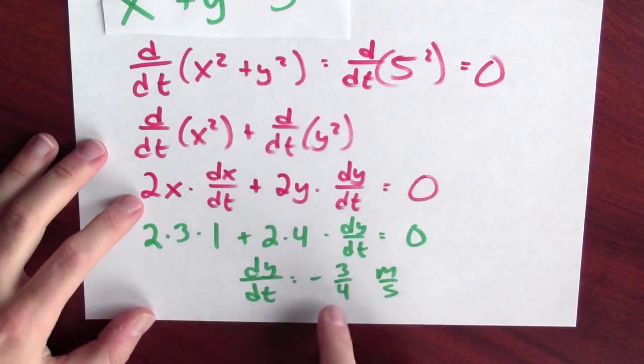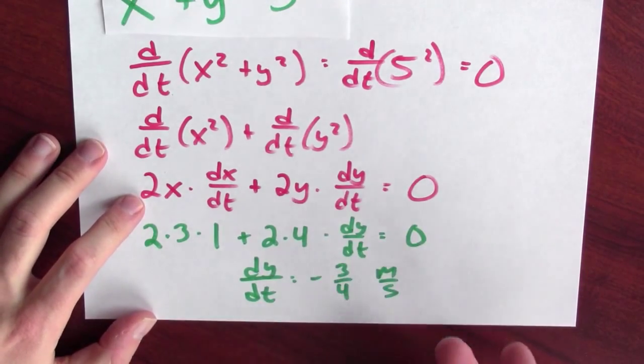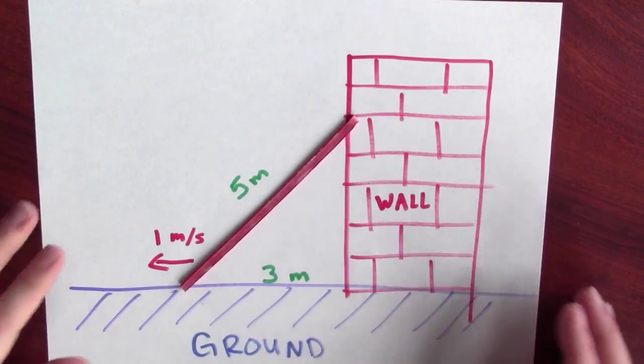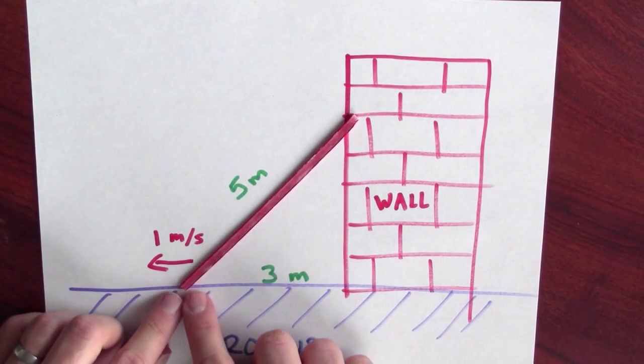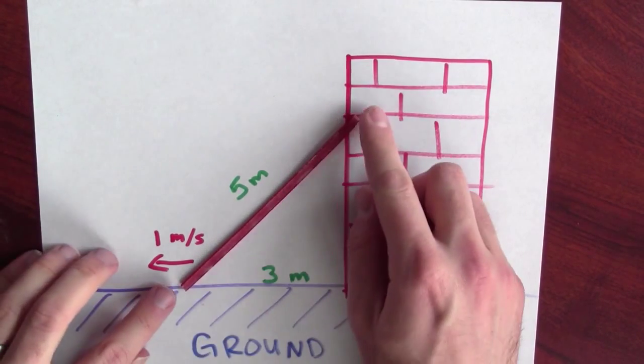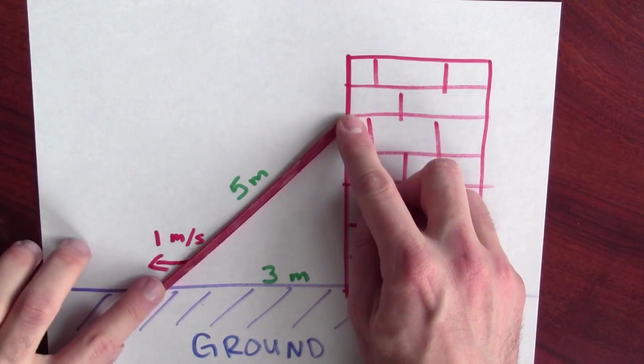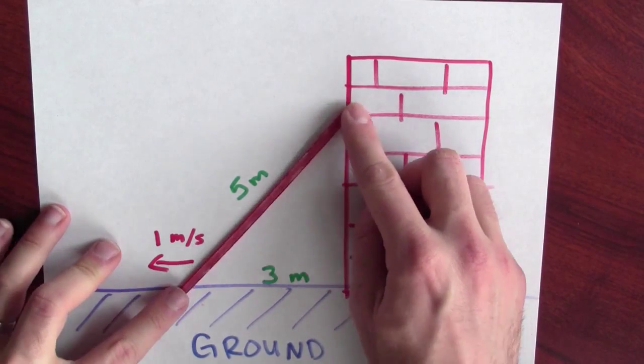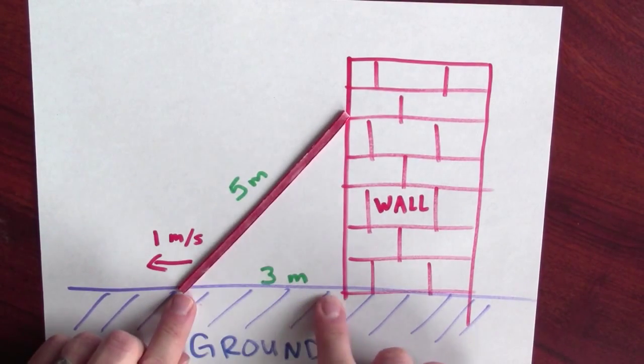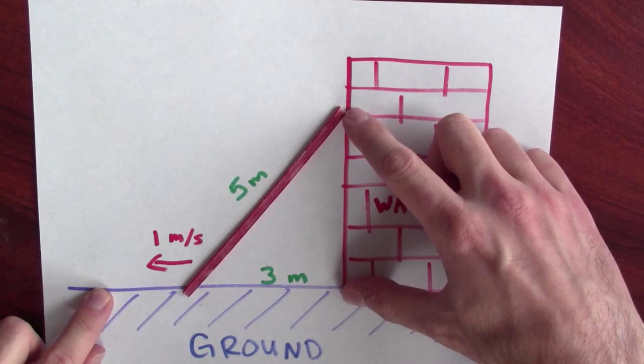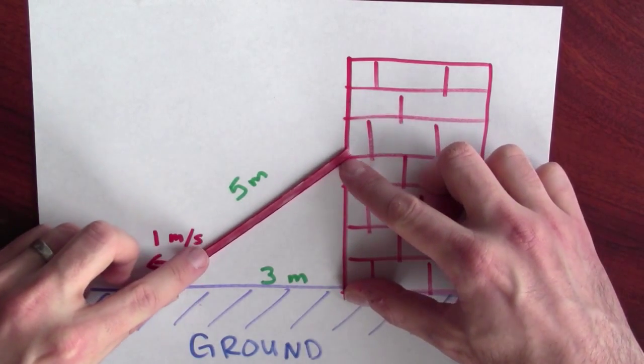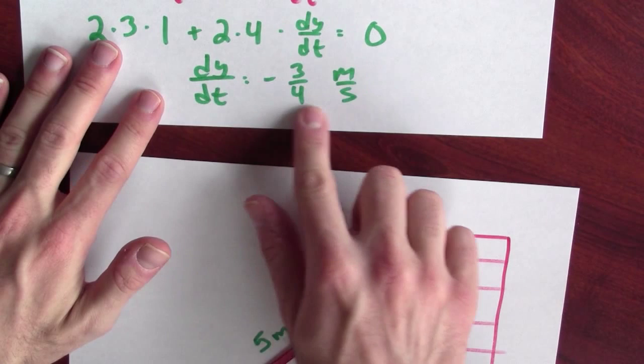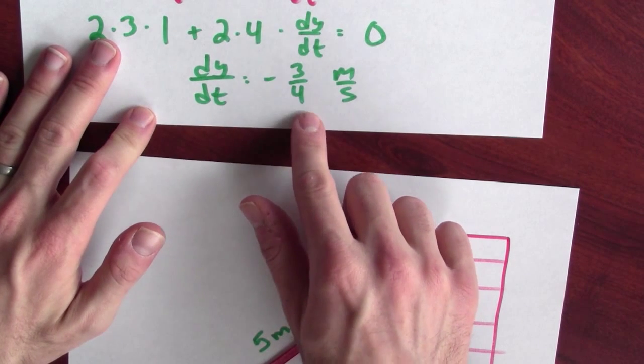Does the sign, the SIGN of that answer make sense? So yeah, does it make sense that this is negative 3 quarters of a meter per second? Well, take a look at our picture, right? I'm pulling the bottom of the ladder this way, right? So I'm moving the bottom of the ladder this way. And as I do that, the top of the ladder moves down the side of the building, right? So as this distance, which is x, is increasing, this distance, which is y, is decreasing. And so yeah, it totally makes sense that dy dt is negative.